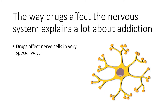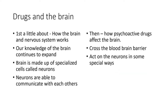The way that drugs affect the nervous system tells us a lot about addiction. Drugs affect nerve cells in some very special ways. Drugs in the brain and by extension the nervous system — first a little about the brain and how the nervous system works. Our knowledge of the brain continues to expand. The brain is made up of specialized cells called neurons. Neurons are able to communicate with each other and they also can communicate with muscles and other parts of the body.